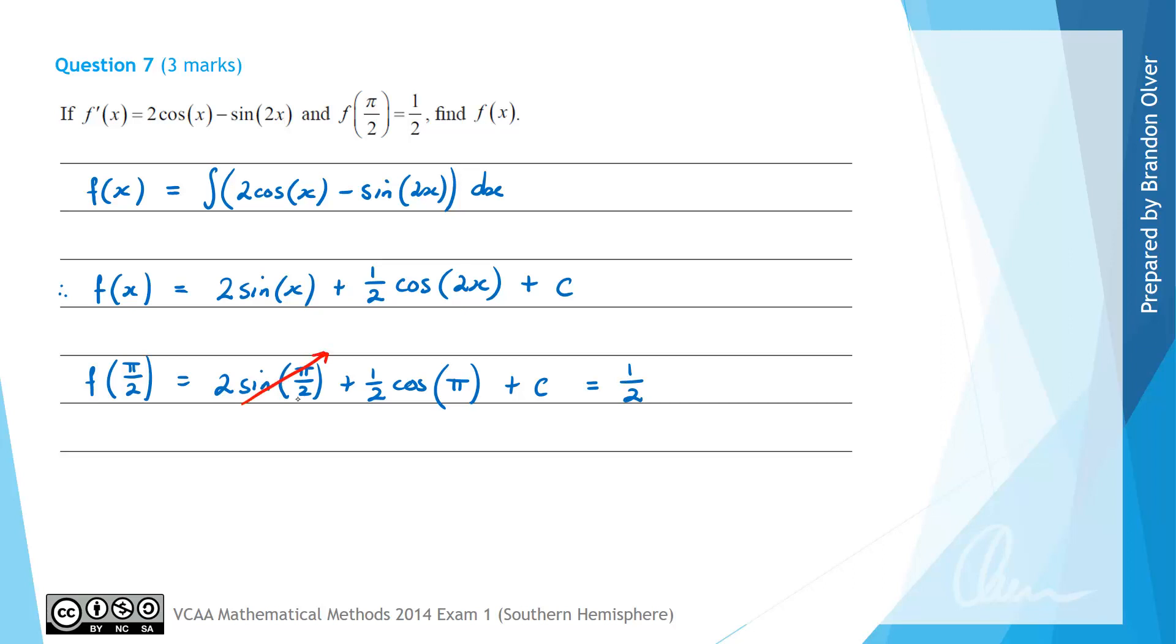Now sin(π/2) equals 1 and cos(π) equals -1. Therefore we find 2 times 1 is 2 minus 1/2 plus c must equal 1/2, so therefore c must equal -1.